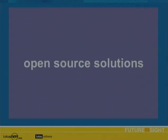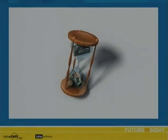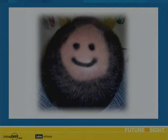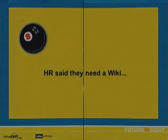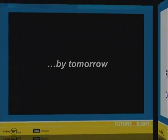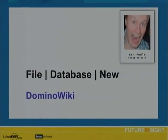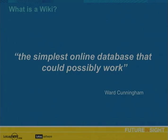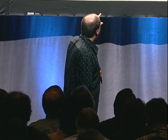HR said they need a wiki by tomorrow. File, database, new — Domino Wiki by Ben Poole from the UK, who is in the audience. What is a wiki? As defined by Ward Cunningham, the father of wikis: 'the simplest online database that could possibly exist.' Examples include Wikipedia, Katrina Help, the OpenNTF WikiFAQ, and Val Wiki. We actually used a wiki this year for tracking Lotusphere friends and family — cell numbers, where everyone's staying, how to get in contact — and Ben customized it with the Lotusphere theme.